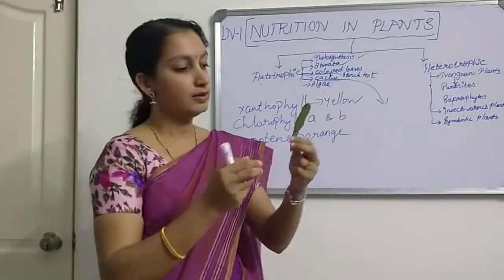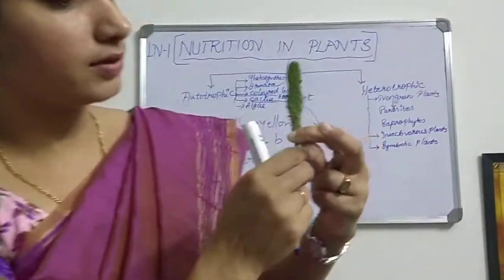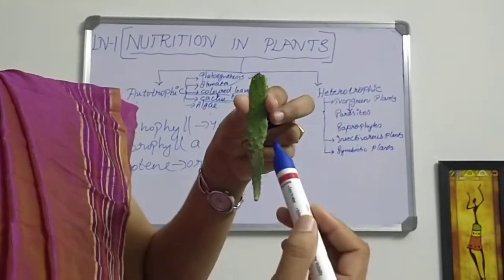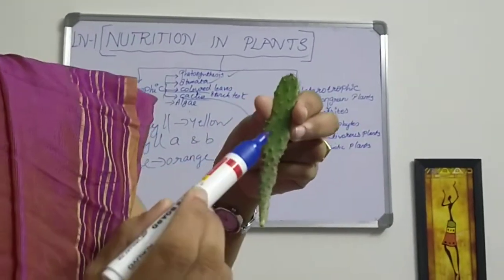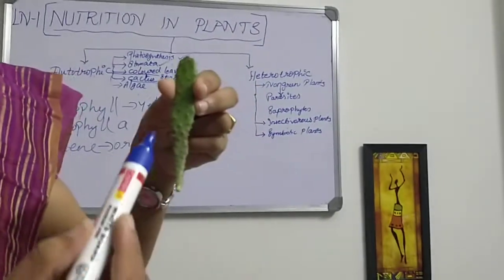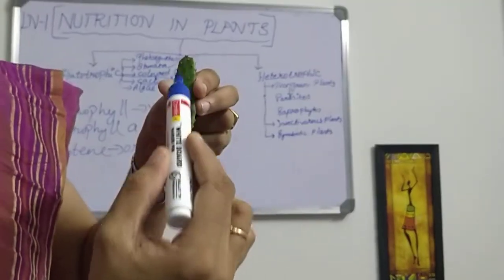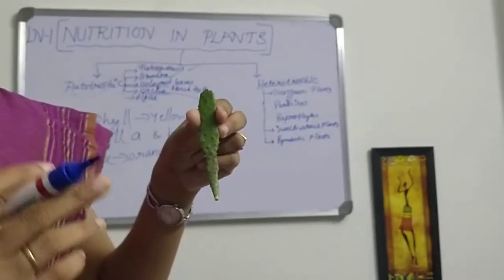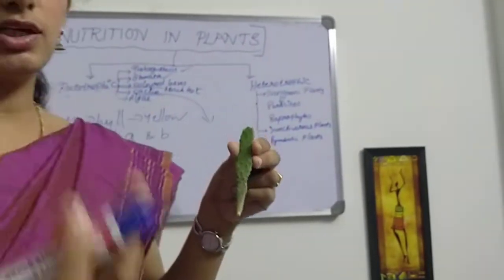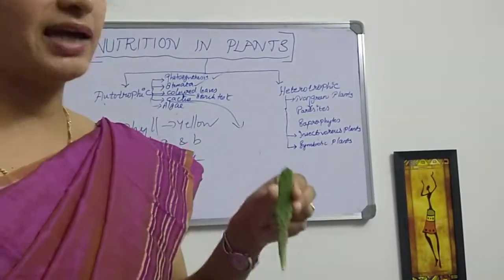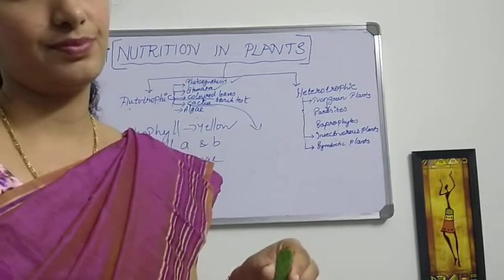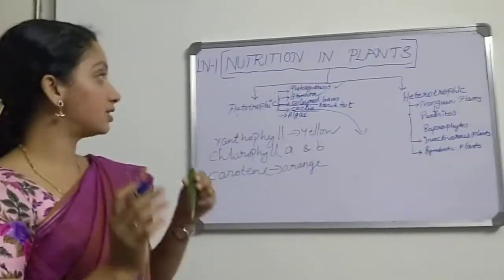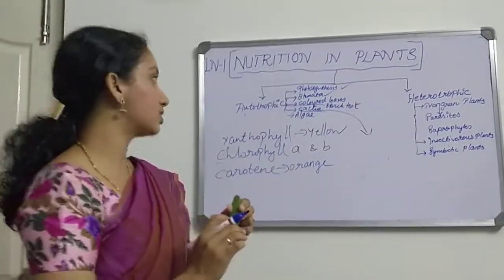In the cactus, there are no leaves — the leaves are modified into small spine structures. There is a stem which is green in color, contains chlorophyll, and performs photosynthesis. So instead of the leaf, the stem is preparing food for the plant. This is the mechanism of photosynthesis in the cactus plant.